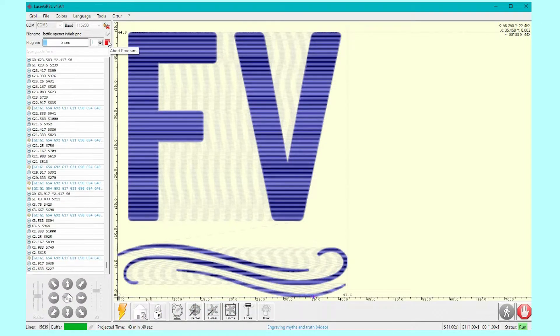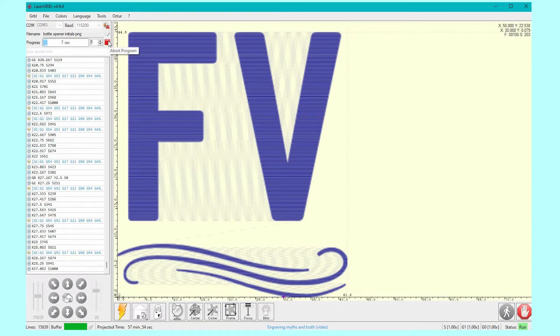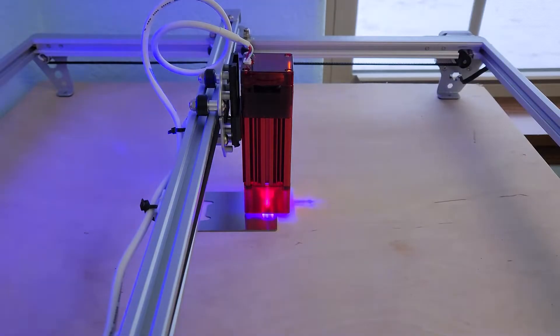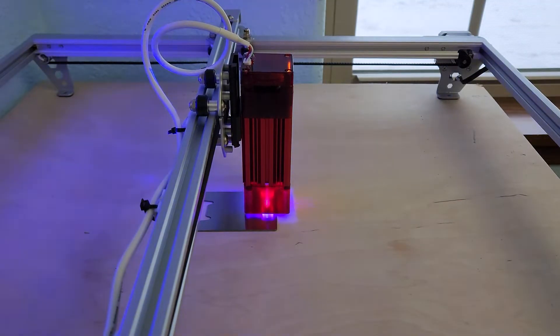Engraving stainless steel is a pretty slow speed, so this did take about 50 minutes to do. Always ensure when you're using your laser that you're wearing safety goggles and that you're in a ventilated space.